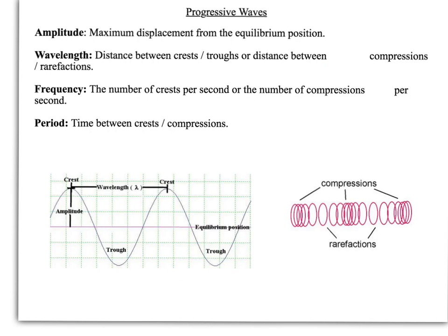There's a few key things you need to know. First of all, amplitude - the maximum displacement from the equilibrium position. So this is your equilibrium position here, and your amplitude is this distance here, the maximum displacement from that equilibrium position.